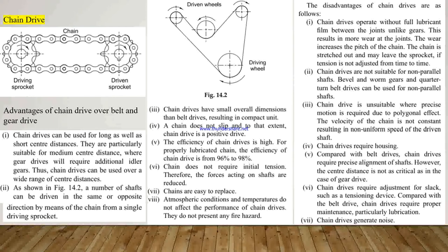There are some disadvantages over belt and gear drives. Chain drives operate without a full lubricant film between the joints, unlike gears, and this results in more wear at the joints. Wear increases the pitch of the chain; the chain is stretched out and may leave the sprocket if tension is not adjusted from time to time. Chain drives are not suitable for non-parallel shafts — bevel and worm gears or belt drives can be used for non-parallel shafts. Chain drives are unsuitable where precise motion is required due to the polygonal effect. Chain drives require housing and precise alignment of shafts.